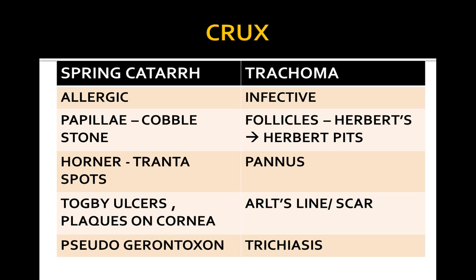We will end with a quick rapid review comparing spring catarh versus trachoma. Spring catarh is allergic — features include cobblestone papillae, Horner-Trantas spots, Togbe's ulcers, corneal plaques, and pseudogerontoxone. Trachoma is infective — features include Herbert follicles leading to Herbert pits, pannus, Arlt's scar, and trichiasis. This comparison table is high yield — just pause at this slide for final revision.